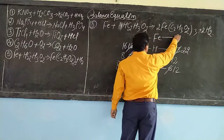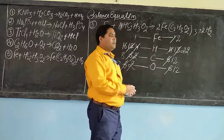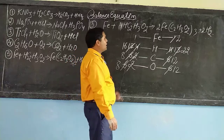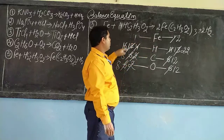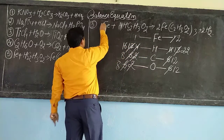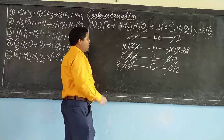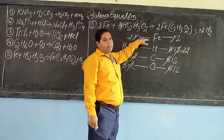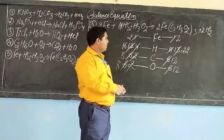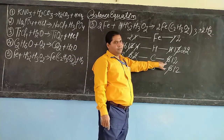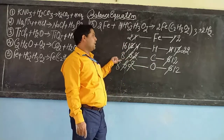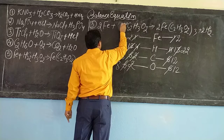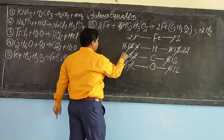Also you see the number of iron increased and now it becomes 2. So once again we have to start from the metal. In the product side the number of iron atoms is 2, so in the reactant side we also have to make it 2 — we will put 2 here. Now the carbon atom in the product side is 12, whereas in the reactant side only 8. So to make carbon 12, in place of 4 we will put 6. 6 into 2 = 12.